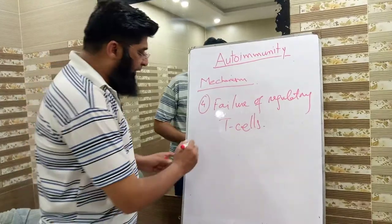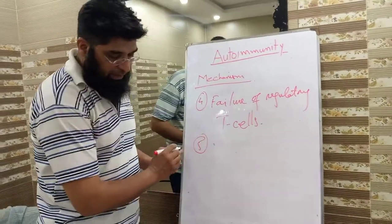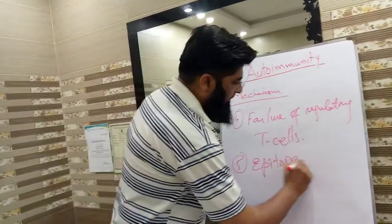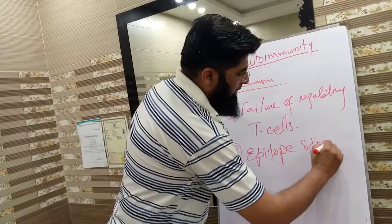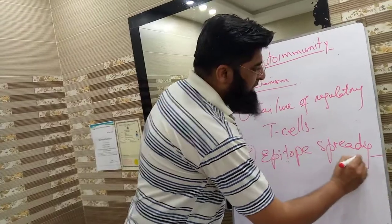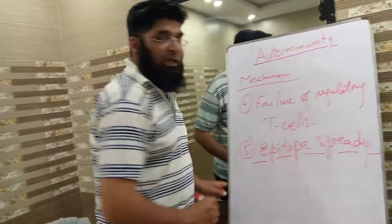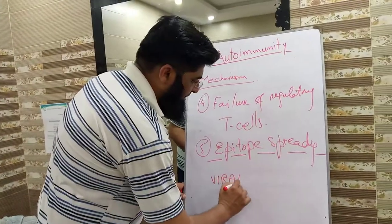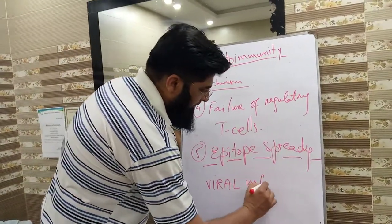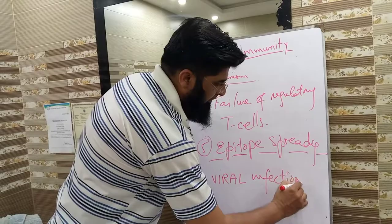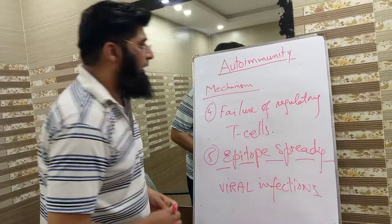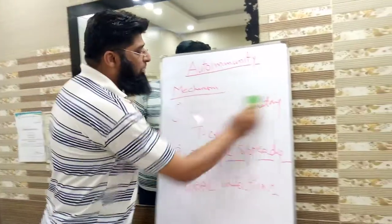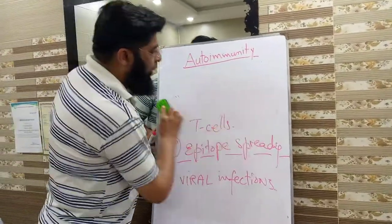The fifth and last mechanism is epitope spreading. This type of mechanism is mostly seen in viral infections. So I have discussed with you the five common mechanisms of autoimmunity.